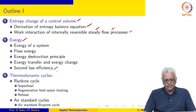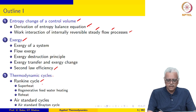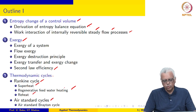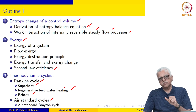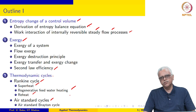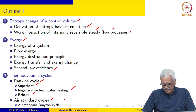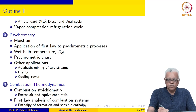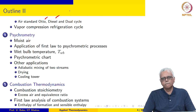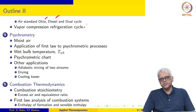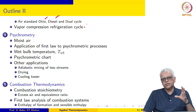The next module involves thermodynamic cycles. We look at the Rankine cycle — not just the basic Rankine cycle, but additional variations. Then we look at air standard cycles, where air is the working substance: the air standard Brayton cycle, followed by the air standard Otto cycle, diesel cycle, and dual cycle. The last cycle in this module is the vapor compression refrigeration cycle — again, starting with the basic cycle and then modifications seen in practical applications, including real cycles.